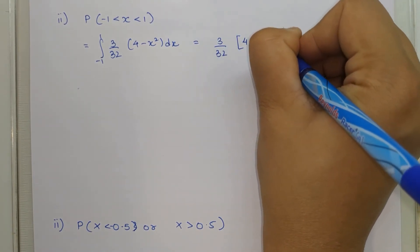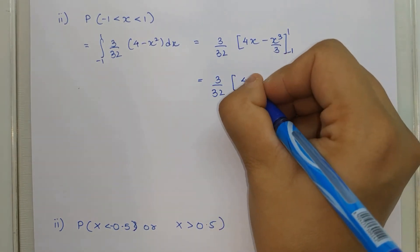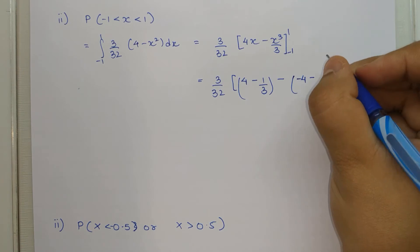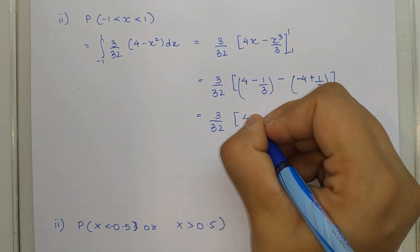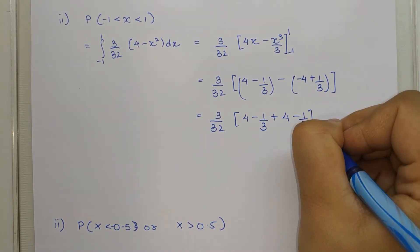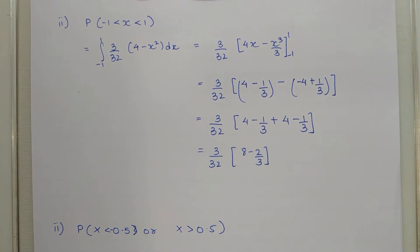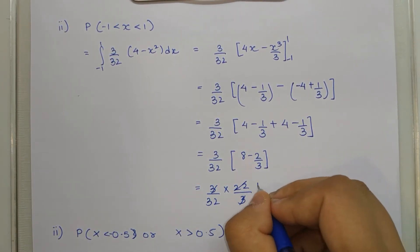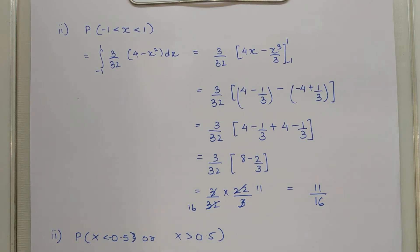For P(-1 < X < 1): integrate from -1 to 1. Integration remains (3/32)[4x - x³/3] from -1 to 1. Substituting 1 gives 4 - 1/3; substituting -1 gives -4 + 1/3. Adding: (3/32)(8 - 2/3) = (3/32)(22/3). The 3s cancel giving 22/32 = 11/16.